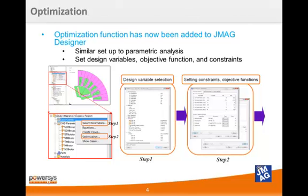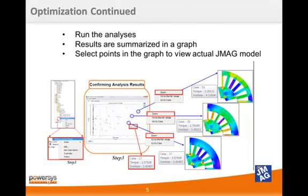To begin today's presentation, let's look at the optimization tool. This feature functions much like the parametric analysis tool, except that you will need to specify an objective function and constraints. The first step is to select the parameters you want to optimize. Then you can constrain the range of possible values for those parameters and set an objective function. Next, you run the analyses, and the results are summarized in a graph that shows every test point. You can then click on any of these test points to open the actual JMeg model and perform further analysis. The optimization tool is a good way to quickly iterate on a design and see how those design changes have altered the results.